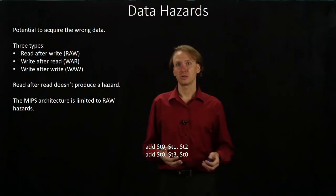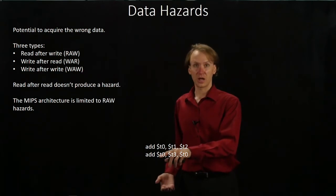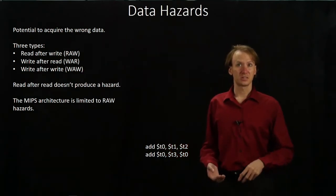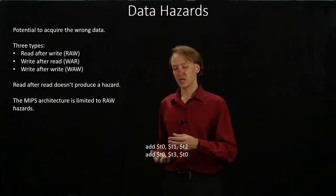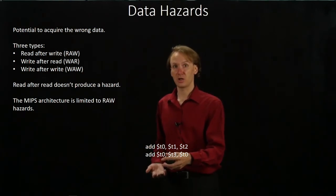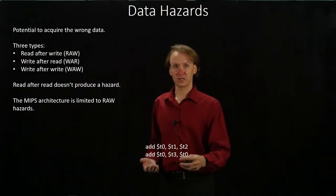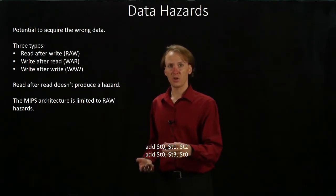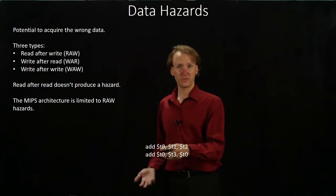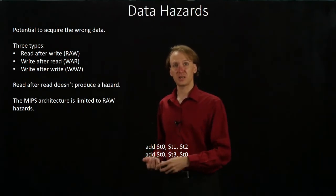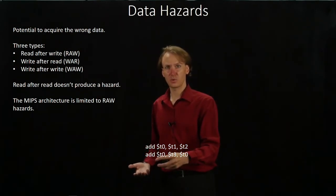Our third type of hazard is a write-after-write hazard. This type of hazard occurs when one instruction tries to write to a register after the previous one did. Similar to the write-after-read hazard, this kind of hazard can occur when one instruction is capable of writing to a register really early in its pipeline before the other one has had a chance to. So in this case, the second instruction might complete and write its results to T0 while the first one is still doing its computation. If that occurred, then the first one would eventually finish and it would overwrite the results of the second add instruction, leaving us with the results of the first instruction instead of the ones that we actually want.